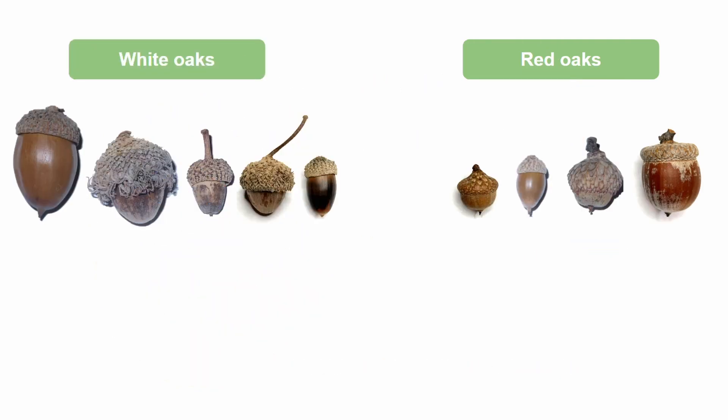Here we have nine different acorns that are commonly found in North America, separated into two groups: the white oaks, which have generally larger acorns, and the red oaks, which have smaller acorns. Now let's talk about a few more distinguishing traits of red and white oaks before getting too deep into our acorn identification.